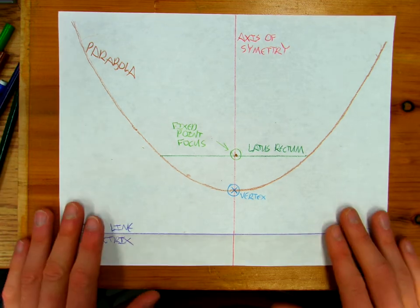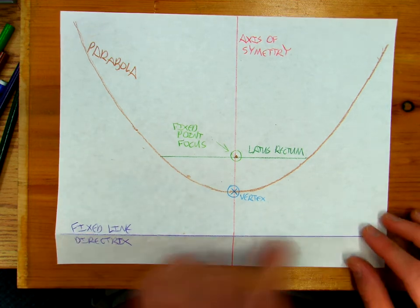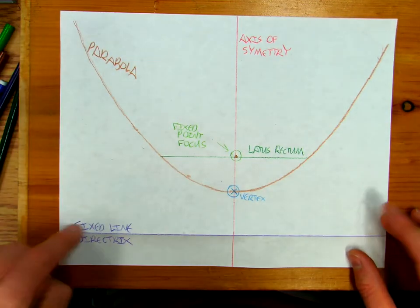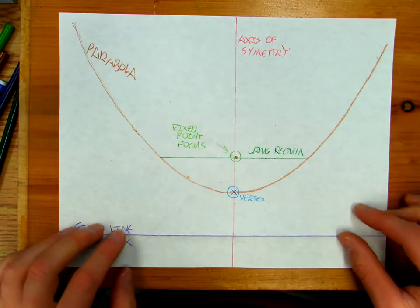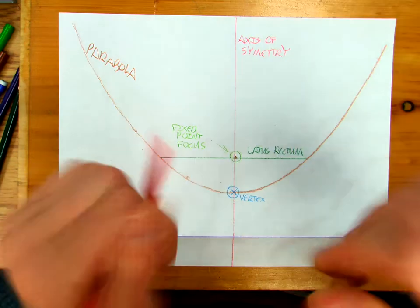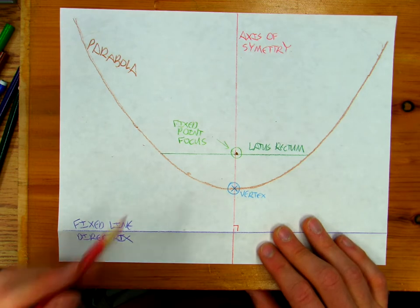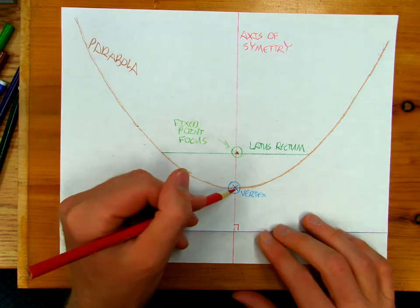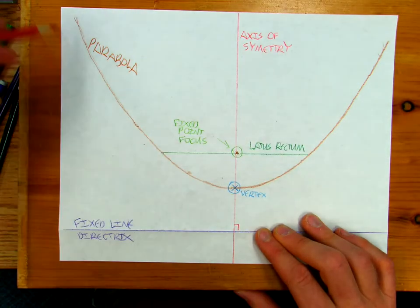So that's basically the tour of the parabola. So you can see how I made it. And I've got a fixed line, a fixed point, and the set of all points equal distance between the fixed line and the fixed point. And that's my parabola. So this here, my axis of symmetry, is perpendicular to the directrix and passes through the focus.